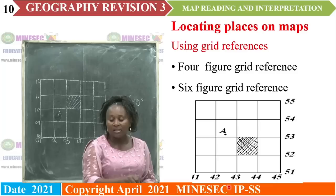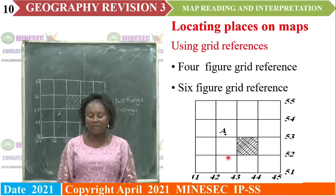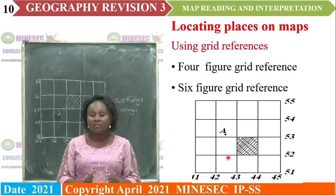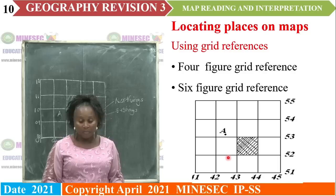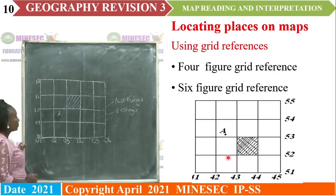When we use grid references, we can locate specific squares or features within a specific square. When we use the six-figure grid reference, we locate specific features. In locating places on a topographic map using grid references, the first one is the four-figure grid reference. Remember, grid references are lines superimposed on a map, and these lines are the eastings — the vertical lines.